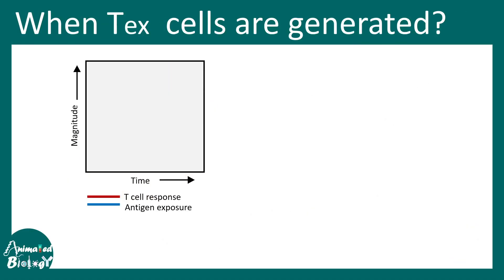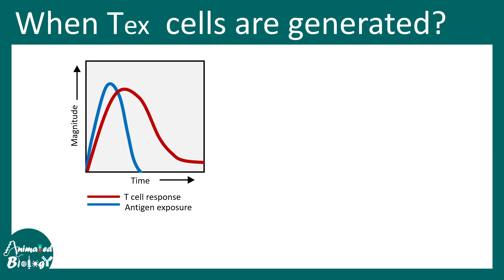This is the normal response curve of a cytotoxic T cell during a viral infection. There is antigen exposure, a peak of infection, and after a point the infection is resolved. Initially naive cells recognize viral particles on class 1 MHC, they become effector T cells, kill the infected cells, are then eliminated, and ultimately some form memory cells. This is the normal kinetics.